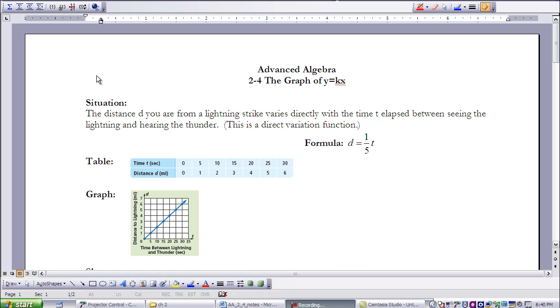You can also see a graph here of the situation, and if you notice, it has an appearance of being linear. It is a line. It goes through zero, zero, and it proceeds with a slope of one-fifth.